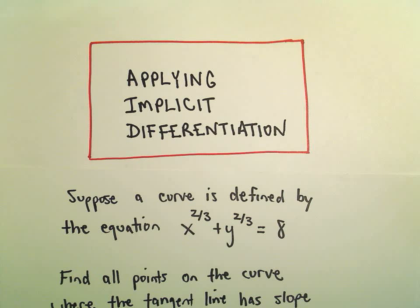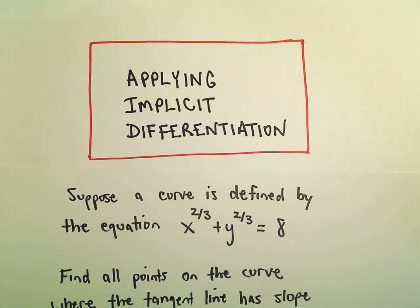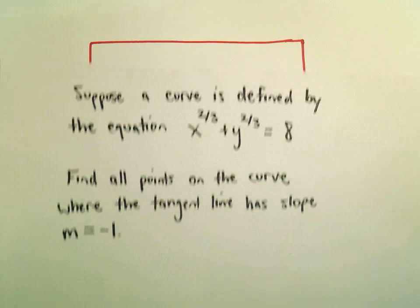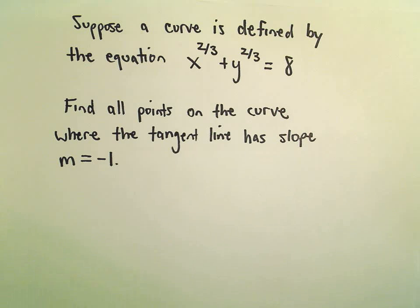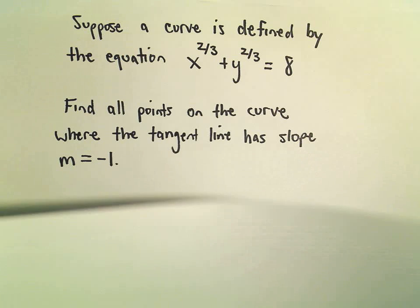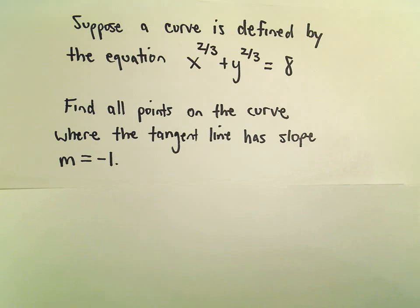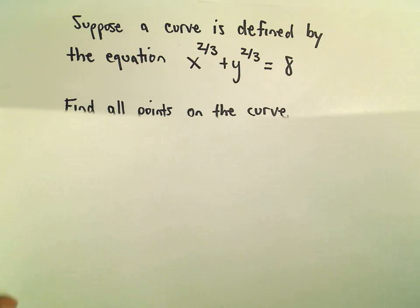In this video we're going to do another example related to implicit differentiation. Here we've got this curve defined by x to the two-thirds plus y to the two-thirds equals eight. We want to find all points where the tangent line has a slope of negative one.